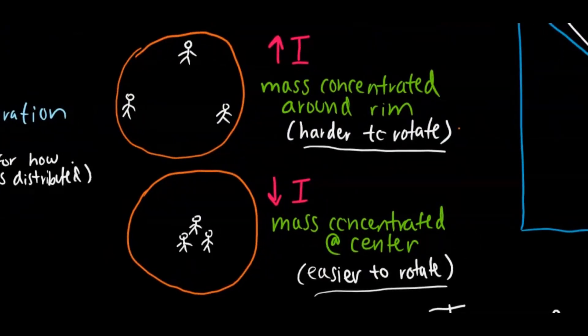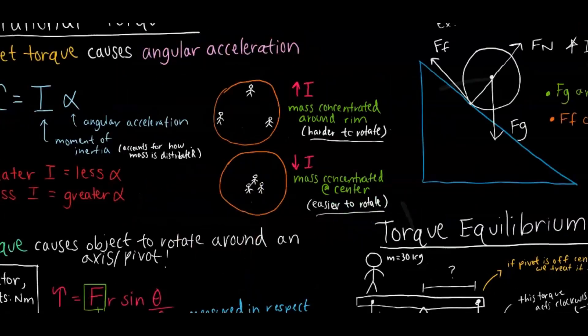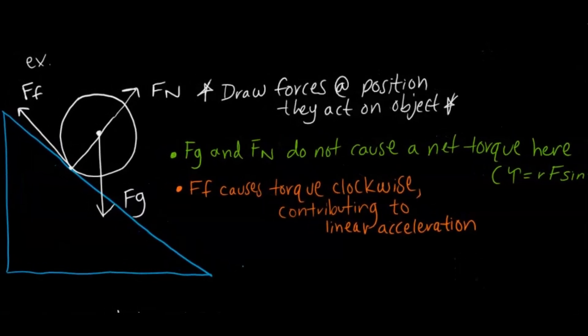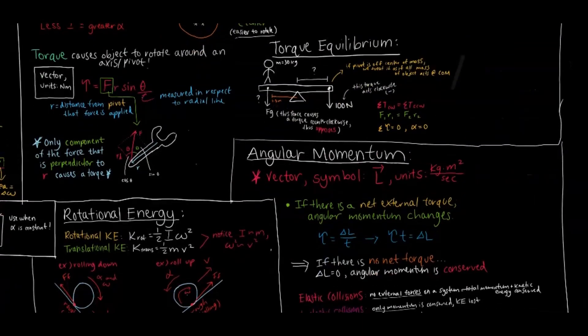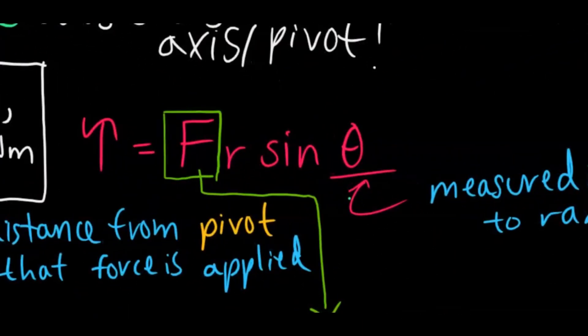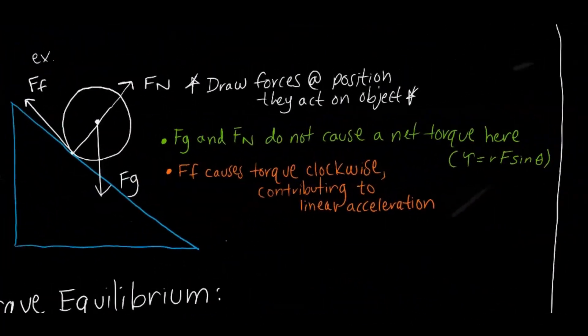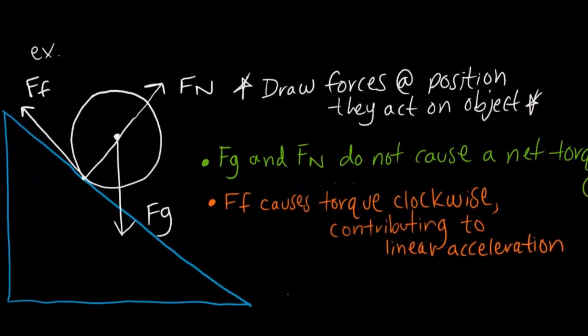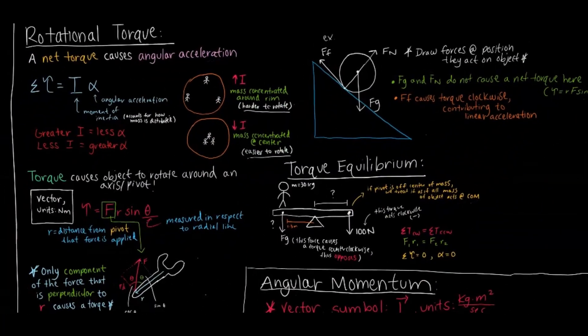Here's a diagram showing how moment of inertia changes based on the concentration of masses, and another diagram with a nice rolling example we'll return to with rotational energy. Torque is equivalent to force times R times sine theta, where theta is measured with respect to the radial line. There's a 2016 FRQ on this — I did a video where I found that the force of friction is the one that actually causes the torque. FG and FN do not cause a net torque. Draw forces from the position at which they act, especially for free body diagrams.